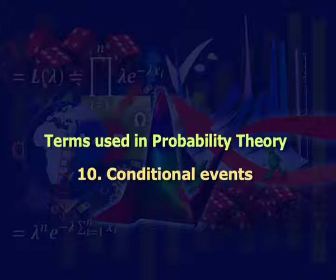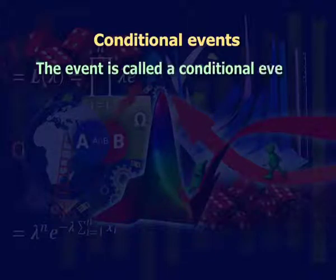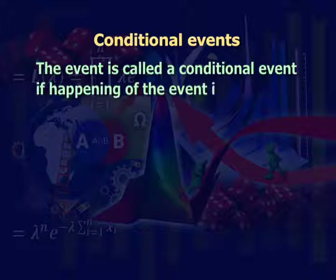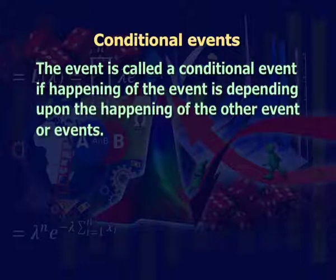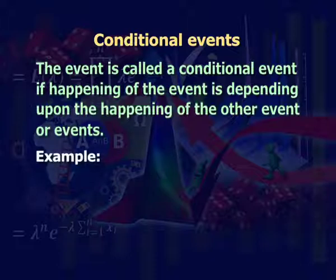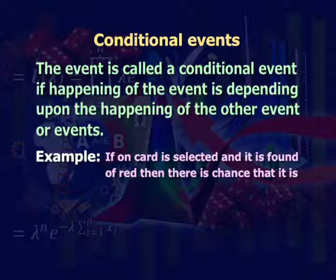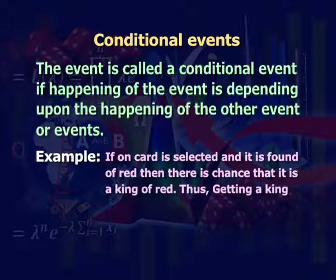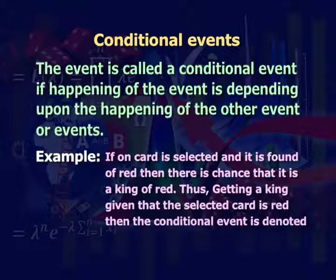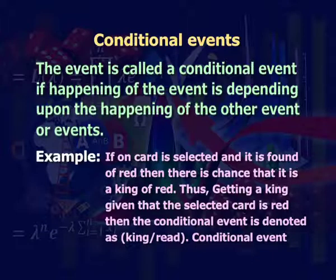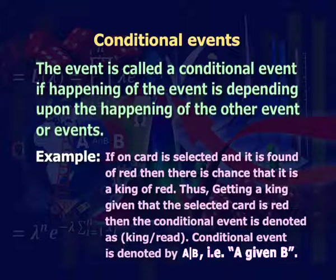Conditional events: an event is called a conditional event if the happening of the event depends upon the happening of another event or events. For example, if one card is selected and it is found to be red, then there is a chance that it is a king of red. Thus getting a king given that the selected card is red is denoted as king given red. Conditional event is denoted by A given B.